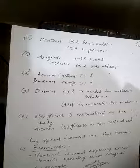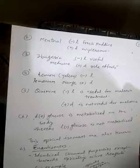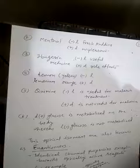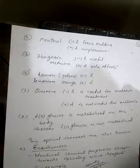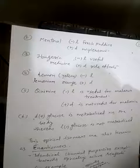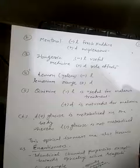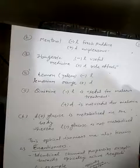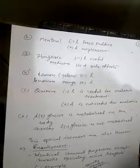Lemon limonene — the yellow color variety is levorotatory and the orange variety is dextrorotatory. Quinine, the minus L (levorotatory) form, is useful for malaria treatment, whereas the dextro form is not useful for malaria. D-glucose is metabolized in the body, whereas L-glucose is not metabolized — that is why we use D-glucose.